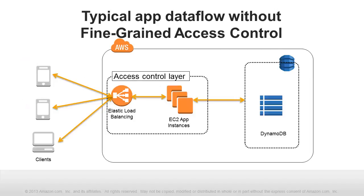Here's a diagram of how access control works in a mobile application which stores its data in DynamoDB but was implemented without fine-grained access control. Clients send data requests to a middle-tier proxy service, typically implemented in Amazon Elastic Compute Cloud instances. Elastic load balancers sit in front of these instances to ensure high availability. The middle-tier manages access control for all client requests, and developing this proxy adds to the burden both of building a new application and of maintaining and scaling it.